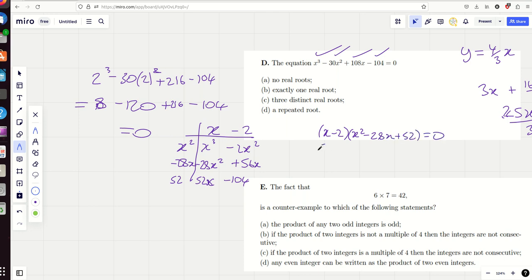And so, this is the same as x minus 2 times by x squared minus 28x plus 52, so this is factorising really nicely, and then factorise it again, minus 2 and minus 26. And so, that's got a repeated root by the look of it, and so the answer's D.